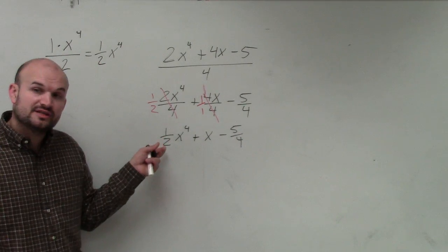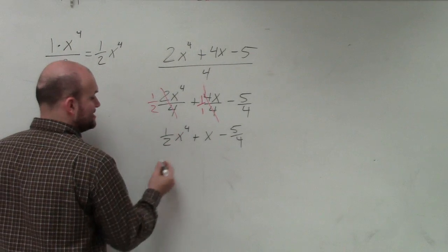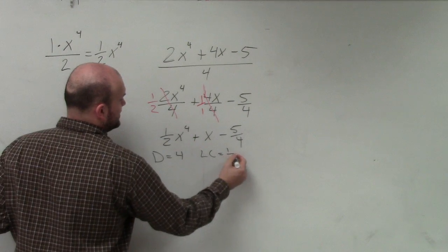So my leading coefficient in this case is 1 half, and my degree is 4, because that's the highest power. So the degree equals 4, and my leading coefficient is 1 half.